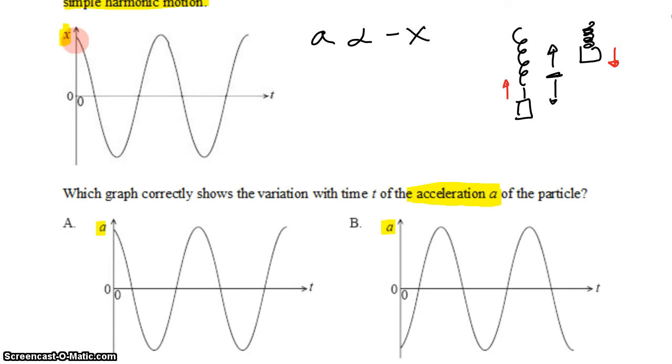So when we have a maximum, a positive maximum for displacement, we want a negative maximum for acceleration. When we have a negative maximum for displacement, we want a positive maximum for acceleration. And when displacement is zero, we want acceleration to be zero.